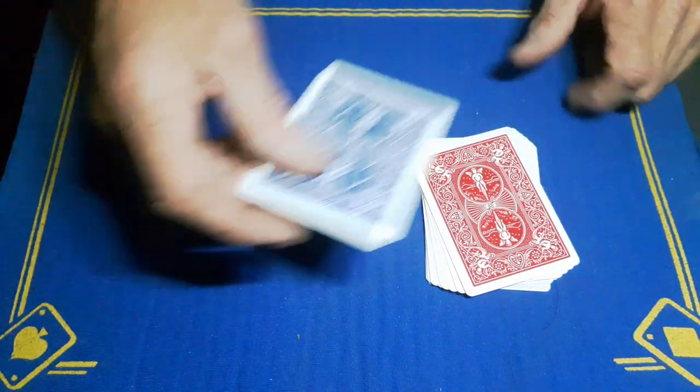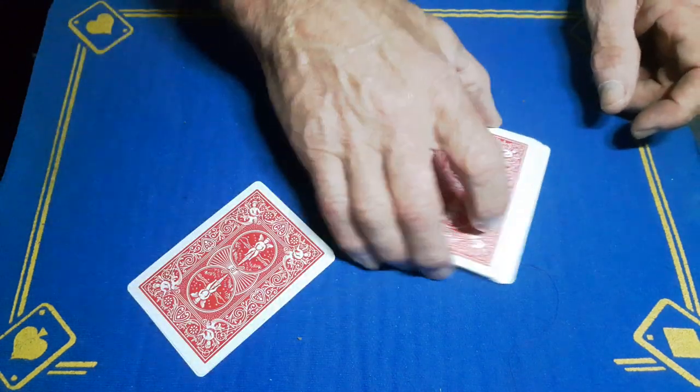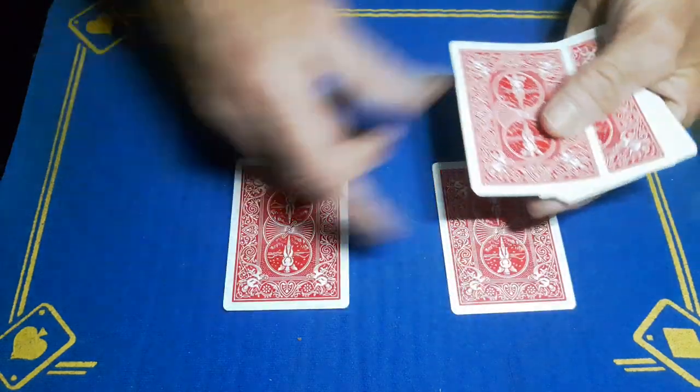You're going to place this card on top and get your spectator to cut the cards as many times as they like, just to make sure the order is mixed up. And then you're just going to deal the cards onto the table.